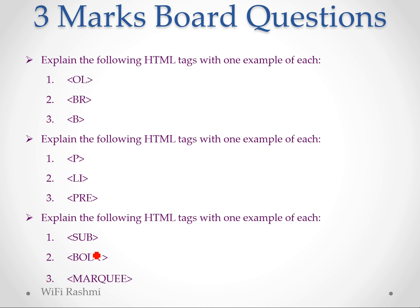Pre tag, sub tag, body tag, and mark we tag — any three tags will be there for three marks. Just keep in mind that you have to give an example also. You have to tell whether it is single or paired, how it is used, and you have to write the example — then you will get one mark per tag.